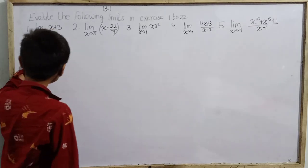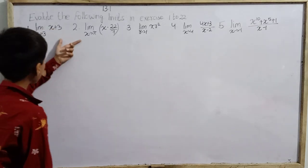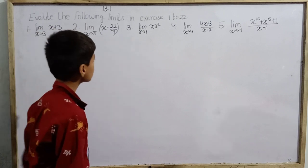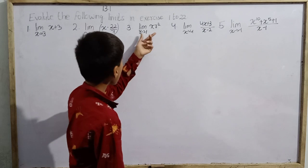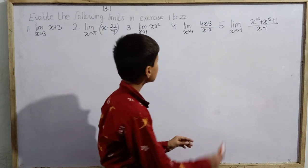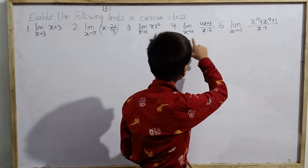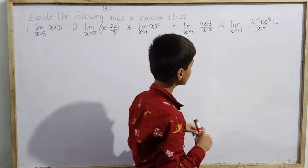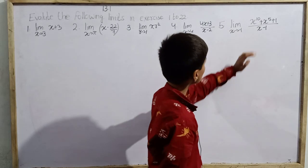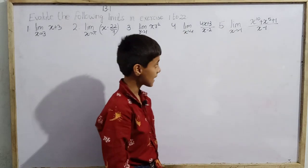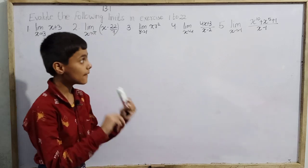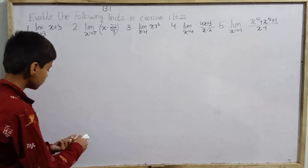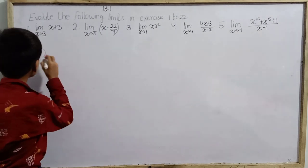First: limit x tends to 3 of (x + 3). Second: limit x tends to π of (x − 22/7). Third: limit r tends to 1 of πr². Fourth: limit x tends to 4 of (x + 3)/(x − 2). And fifth: limit x tends to −1 of (x¹⁰ + x⁵ + 1) divided by (x − 1).